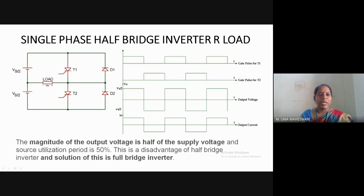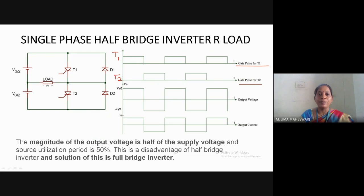We will see the output voltage waveform and output current waveform for a resistive load. The first waveform represents the gate pulse for thyristor T1 and the second represents the gate pulse for thyristor T2. We give control signals to the thyristors to turn on for different intervals. From instant 0 to T1, thyristor T1 is given the gate pulse and is in the on condition, while T2 is off.